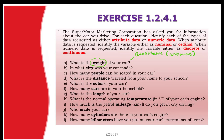In what city do you live? City is qualitative. How many people can ride in your car? People can be counted, so it is quantitative and discrete. What is the distance traveled from your home? Distance can be measured in kilometers, so it is continuous. What is the color of your car? Color can be categorized — red, blue, green — so it is qualitative.